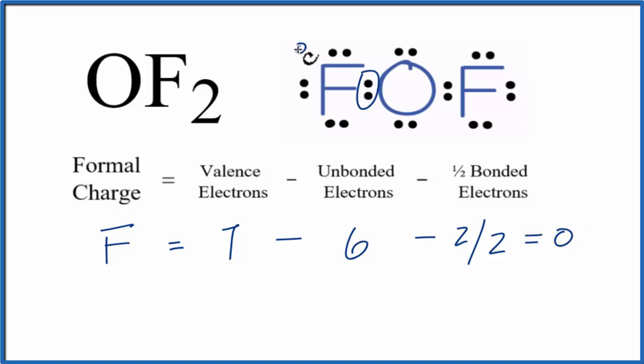So the formal charge on this fluorine is 0. And since these are identical, the formal charge on this fluorine is 0 as well. For the oxygen, which is in group 16, sometimes called 6A on the periodic table, we have 6 valence electrons.